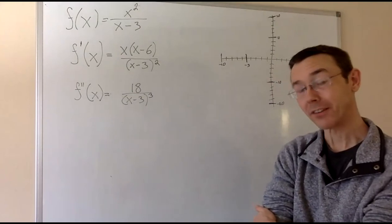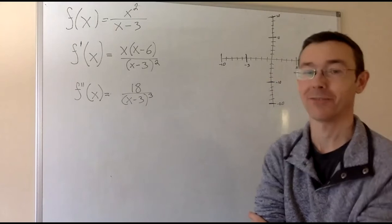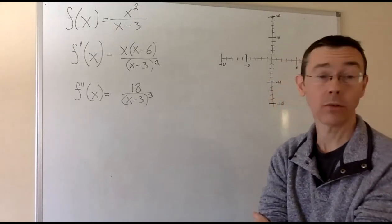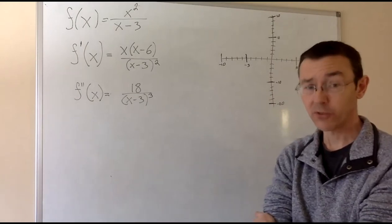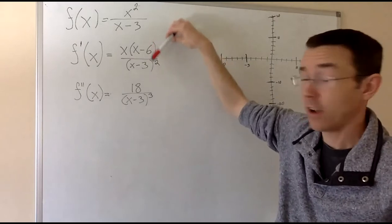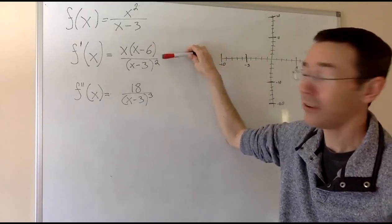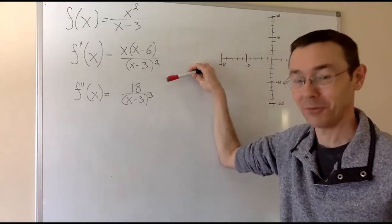Hey everybody, today we're doing another example of curve sketching. This time we're starting with a function itself, not just information about a function. F of x equals x squared over x minus 3. To save us a little time, I've given us the first two derivatives, f prime and f double prime. Of course you get that by doing quotient rule, a little bit of algebra to simplify, and then another quotient rule and a little more algebra.